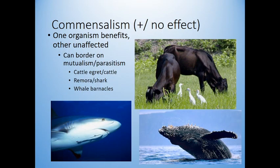The last type of interaction is commensalism — a positive and no-effect interaction where one organism benefits and the other is unaffected. Cattle egrets follow cows around: as the cow grazes, grasshoppers get scared and fly away, and the cattle egrets catch them. The cattle egret benefits; the cow doesn't care at all.